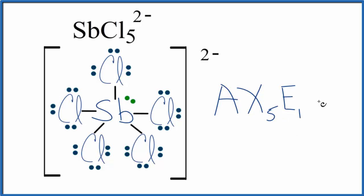And if you look that up, that'll be the square pyramidal as well. This is Dr. B with the molecular geometry and Lewis structure for SbCl5 2-. Thanks for watching.